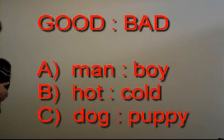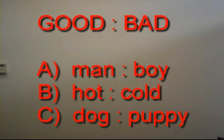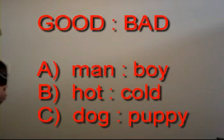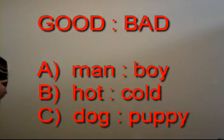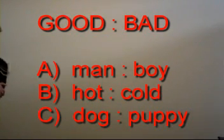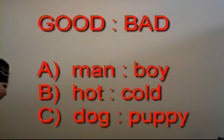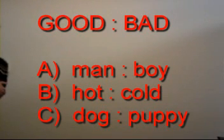So: mad is the opposite of bully — no, that doesn't make any sense. Hot is the opposite of cold — yes, B works. C: dog is the opposite of puppy — no, that doesn't work. So the correct answer is B.